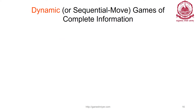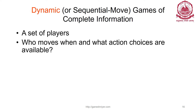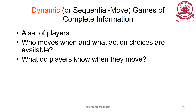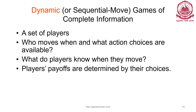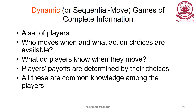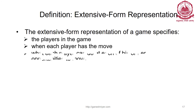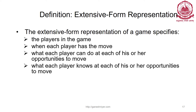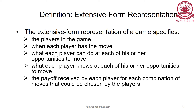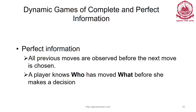Dynamic games or sequential games of complete information specify: a set of players; who moves when and what action choices are available; what players know when they move; and the payoffs determined by their choices — all of which are common knowledge among the players. The extensive form representation specifies players, when each player moves, what they can do at each opportunity, what each player knows at each opportunity to move, and the payoffs received for each combination of moves chosen.